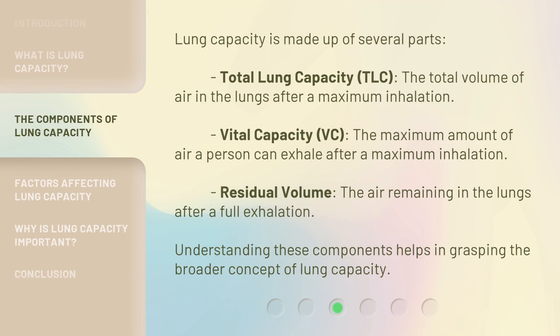Lung capacity is made up of several parts. Total Lung Capacity (TLC): the total volume of air in the lungs after a maximum inhalation. Vital Capacity (VC): the maximum amount of air a person can exhale after a maximum inhalation. Residual Volume: the air remaining in the lungs after a full exhalation. Understanding these components helps in grasping the broader concept of lung capacity.